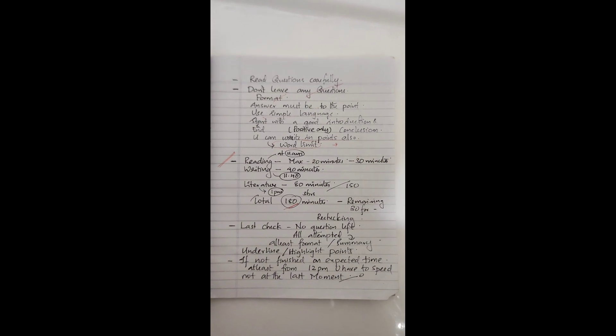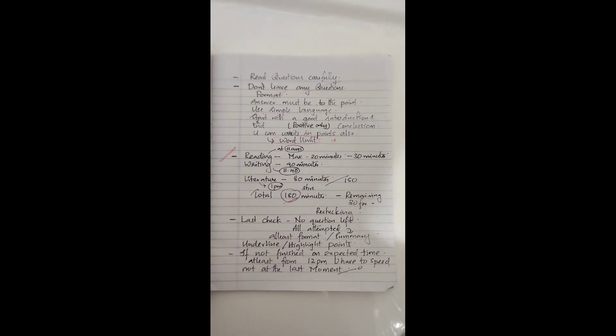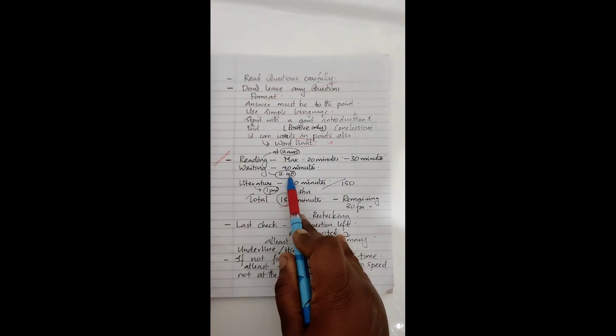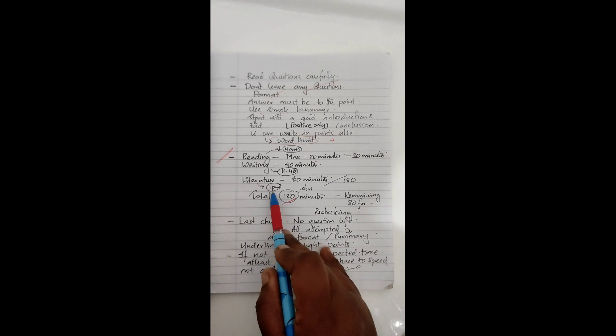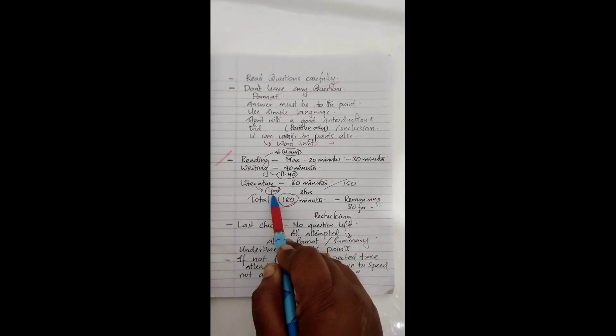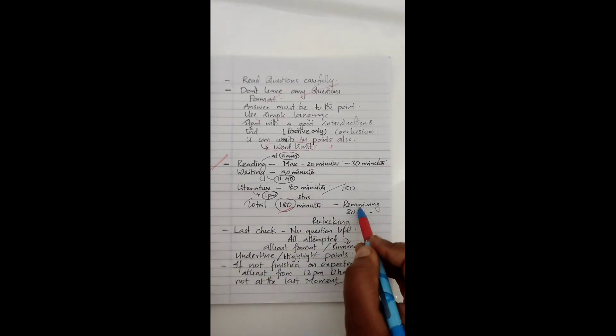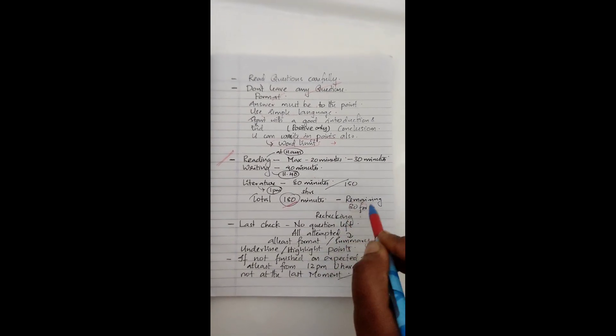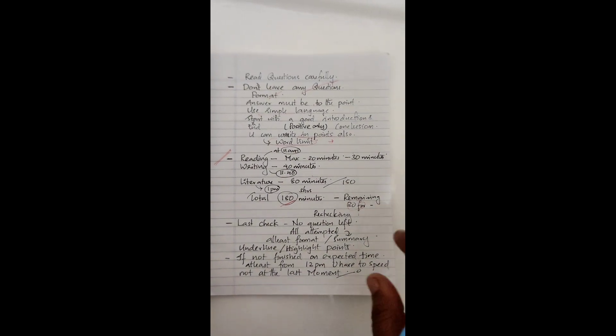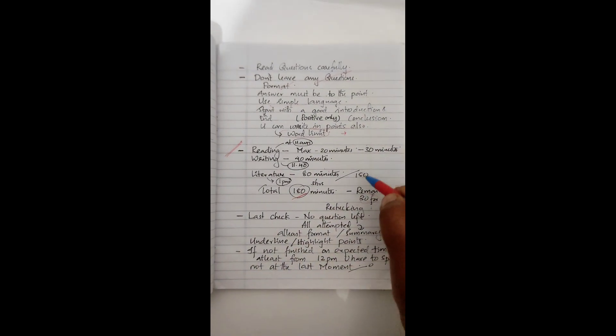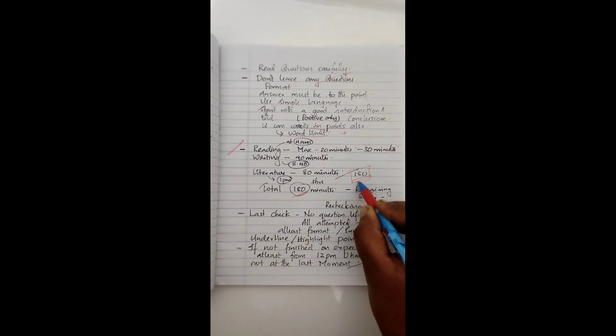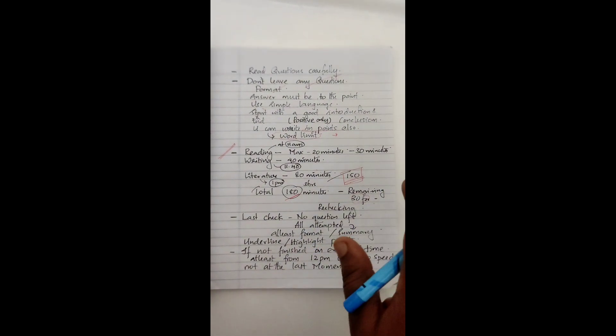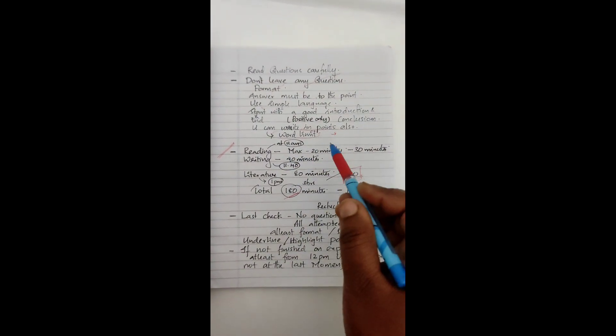Then come to the literature. Literature mein main maximum time bata rahi hai 80 minutes, more than 80 minutes aapko de diya hai. Toh again mein bata rahi hai, aap 12, 11:40 se maan kar chalo, toh 12:50, even 1 o'clock bhi aapka literature part finish kar diya, toh you will have 30 minutes. Ample of time you will have, enough remaining 30 minutes. Aap aram se rechecking and whatever things aapne choda hai, uske liye aram se utilize kar sakti hai. Ye 30 minutes aapke paas hoga. Yeh mein exact timing nahi hai, approx timing bata rahi hai. Thoda bahut upar niche kar sakti hai.